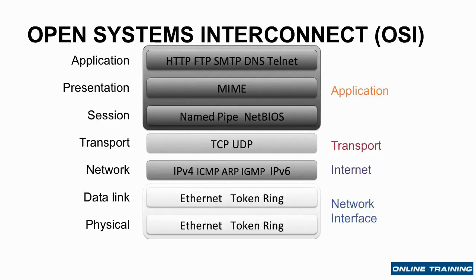When I talk about the internet protocol, you might hear me say things like this is layer 3 or this is layer 7, and these relate to the Open Systems Interconnect, or OSI model. The OSI model defines seven layers. You can see from the bottom up, it starts with physical and data link — this could be Ethernet, it could be token ring — and in TCP/IP terms, we think of that as the network interface. Then we have the network layer.